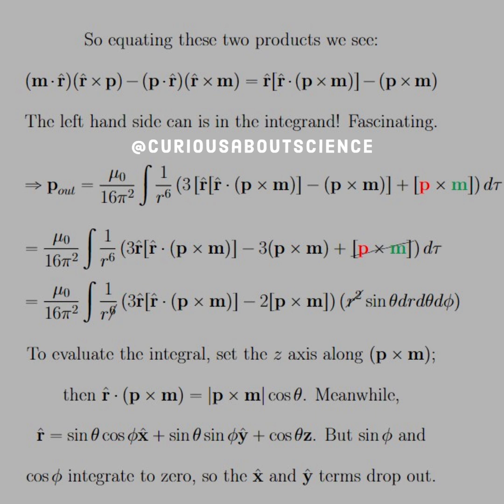And then you see here that the P cross M simplifies down with the 3 times P cross M to negative 2 in the next line. And then we go ahead and plug in d tau in that third line, so the R squared cancels down with the R to the 6th, leaving this with the R to the 4th. And we're kind of left with this compact form here, but to evaluate the integral, we need to set the z-axis along P cross M. If that's the case, then R dot P cross M is equal to the magnitude P cross M cosine. Because of the dot product, the magnitude goes out. So, meanwhile, R hat is equal to the unit vector is equal to several Cartesian vector coordinates, but sine phi and cosine phi integrate to zero, so the x and y terms drop out.